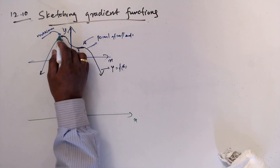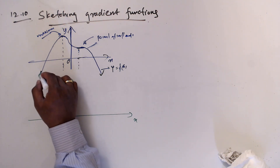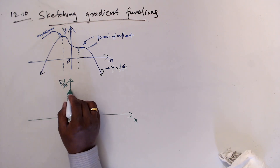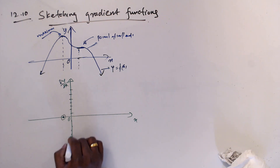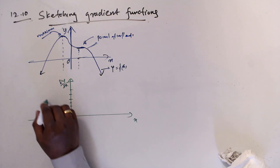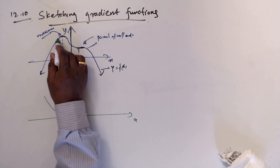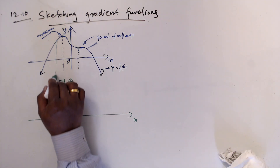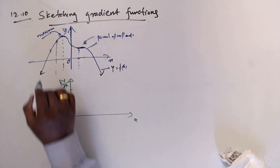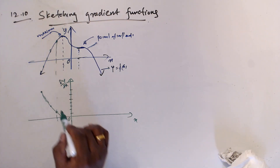How do we mark whether the gradient is positive or negative? The gradient is positive in certain regions — positive values go above the x-axis, negative values go below. So the gradient of each point on the curve maps to a corresponding value on the gradient graph.